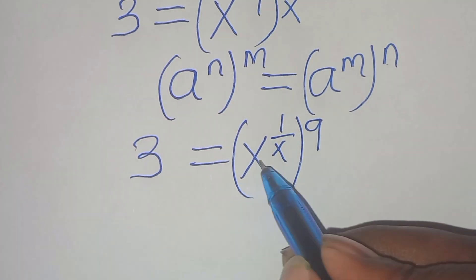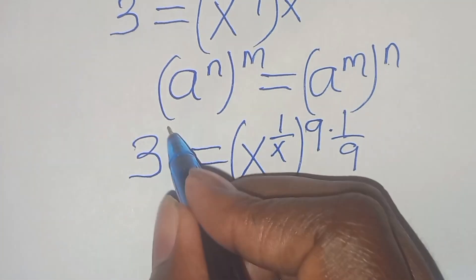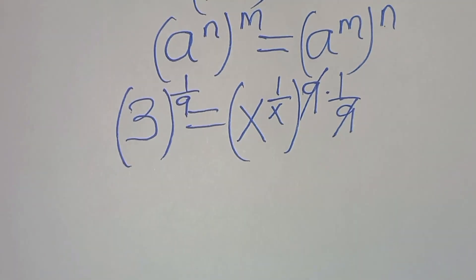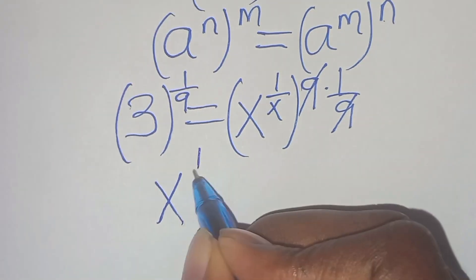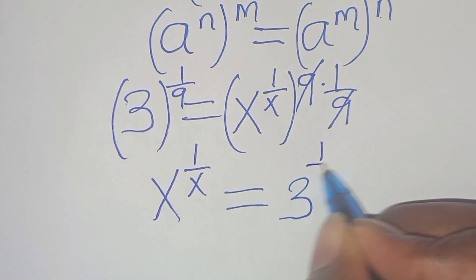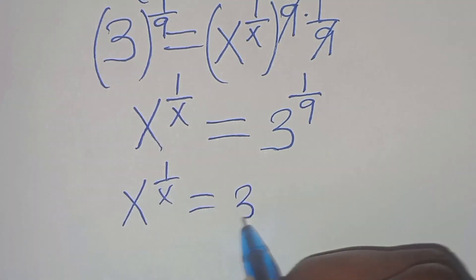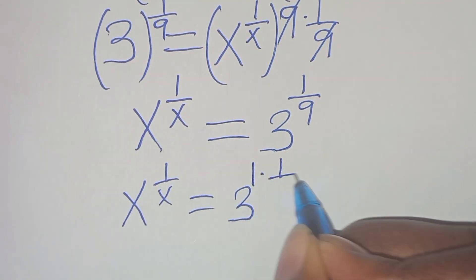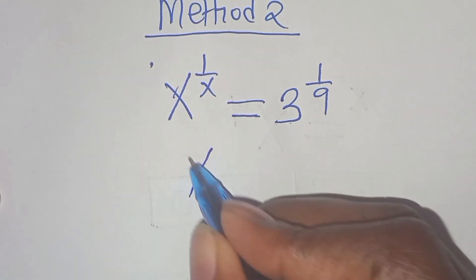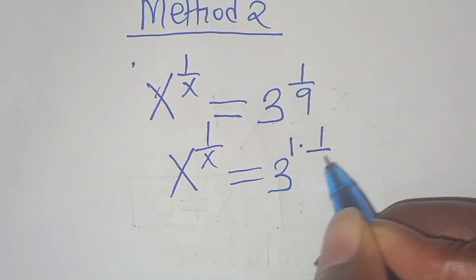The next step: let's raise both sides to the power of 1 over 9 to eliminate the 9 on the right-hand side. So we have 3 raised to the power of 1 over 9, and simplifying, we have x raised to the power of 1 over x equal to 3 raised to the power of 1 over 9.